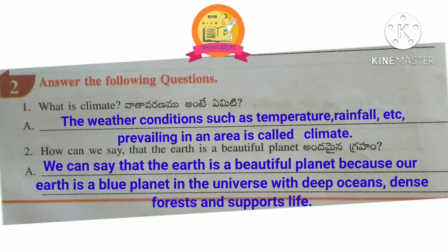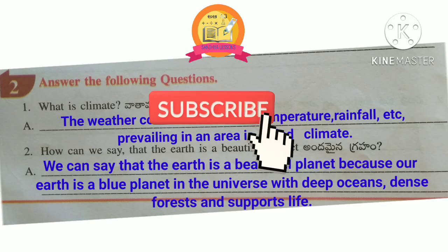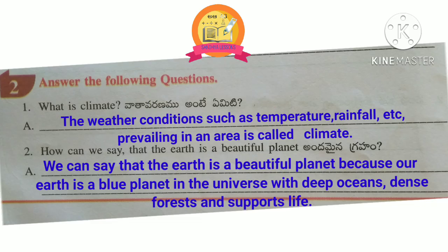Second question: How can we say that the earth is a beautiful planet? We can say that the earth is a beautiful planet because our earth is a blue planet in the universe with deep oceans, dense forests, and supports life.